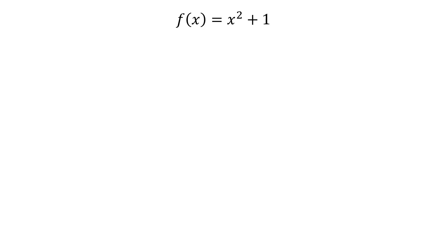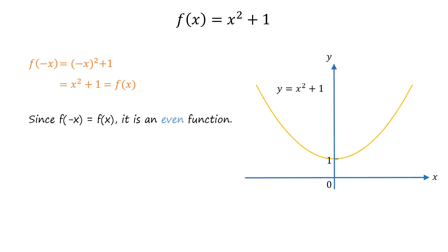Consider the function f of x equals x squared plus 1. Let's see whether the given function is even, odd, or neither. To check this, we first need to determine f of negative x by substituting negative x in place of x. Doing this, we get f of negative x equals the square of negative x plus 1. Since the square of negative x equals x squared, f of negative x equals x squared plus 1, which equals f of x. Since f of negative x equals f of x, the given function is even. It can be seen that the graph of this function is symmetric about the y-axis.